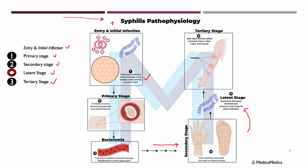If left untreated, it continues to the latent stage, where the infection becomes dormant, showing no symptoms but remaining in the body. Possibly years later, we enter the tertiary stage. What appear here are called gummas — soft tissue lesions that can form in organs, bones, and skin, causing tissue damage. These are destructive lumps that can appear in different organs. The tertiary stage can also lead to heart problems like aortitis, severe brain damage — neurosyphilis — and potentially deadly complications.